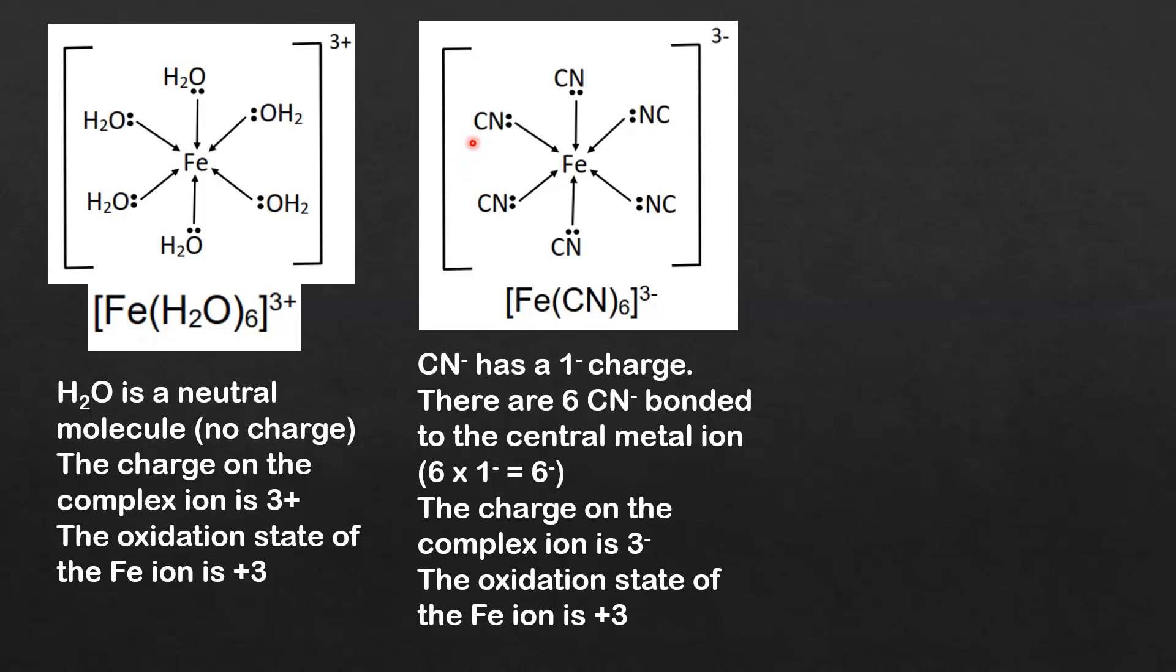In the next example we have cyanide ions as ligands. The cyanide ion has a one negative charge. There are six cyanide ions bonded to the central metal ion, that's a total negative charge of 6 times 1 negative equals 6 negative.